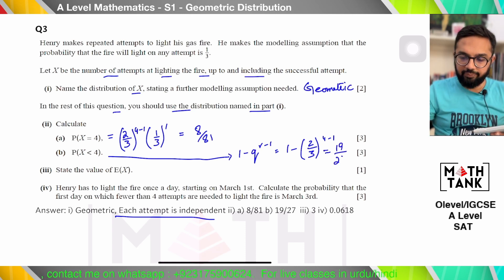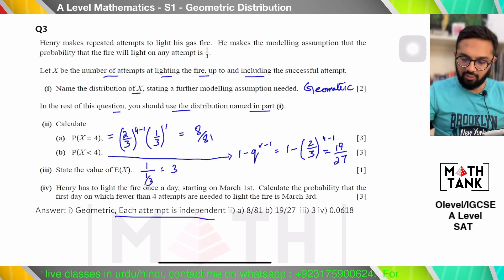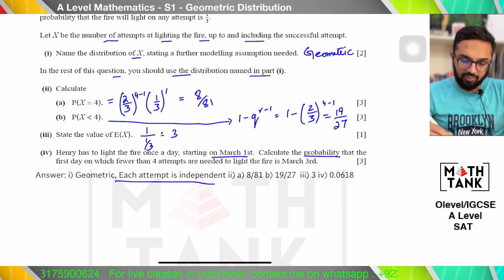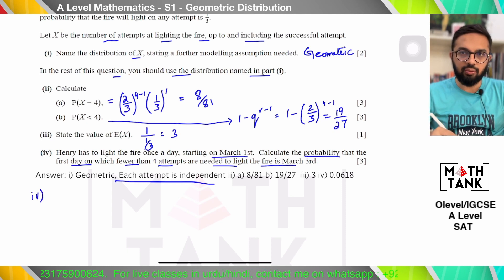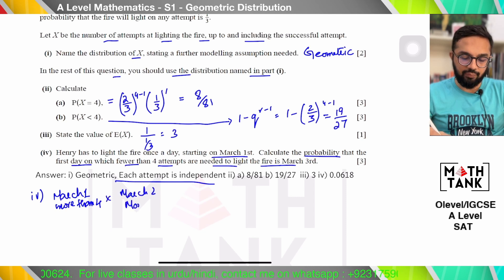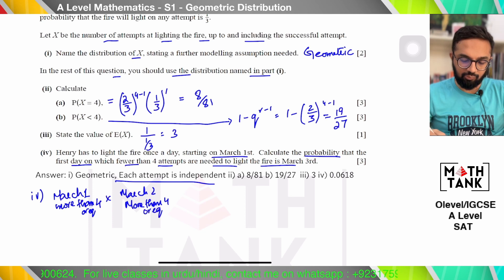The result is 19/27 for P(X < 4) using 1 − q^(r−1). The expected value of X is 1/(1/3) = 3. He lights the fire once a day starting on March 1st. Calculate the probability that the first day on which fewer than four attempts are needed is March 3rd. So on March 1st I need more than or equal to four attempts, on March 2nd I again need more than or equal to four, and on March 3rd I need fewer than four.